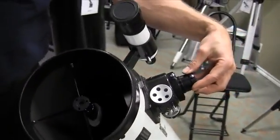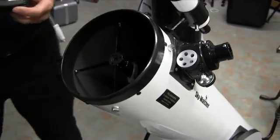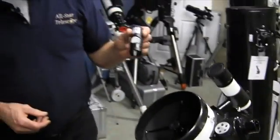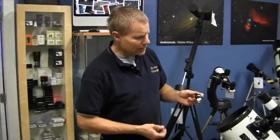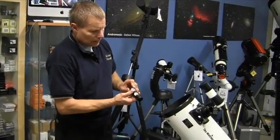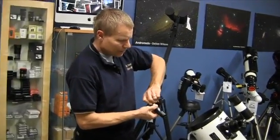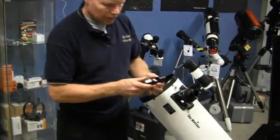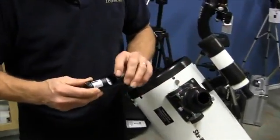We're going to be collimating it with a laser collimator—just a really nice, easy way to get the mirrors in alignment. We're going to turn the laser collimator on and put the target portion of the laser towards the back of the telescope.